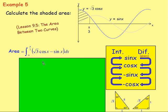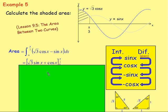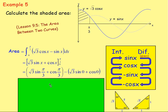From there, we integrate. In big square brackets with limits 0 and π/3: integrating √3cos(x) — cos integrates to sine — gives √3sin(x). Integrating negative sin(x) — negative sine integrates to cos — gives plus cos(x). So we have [√3sin(x) + cos(x)] between π/3 and 0. Substituting in: √3·sin(π/3) + cos(π/3), then take away the result when you substitute 0.